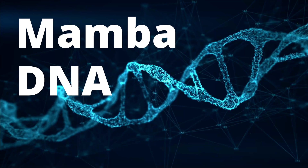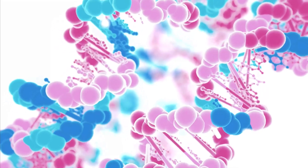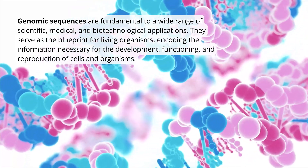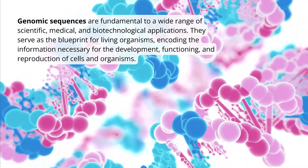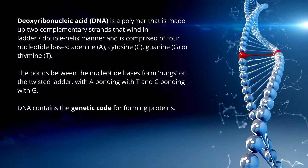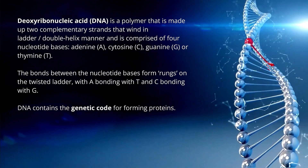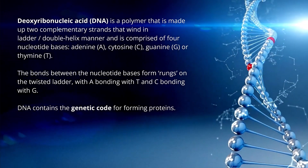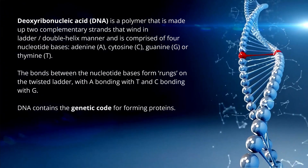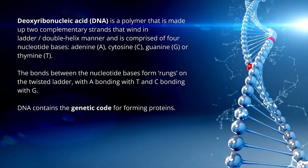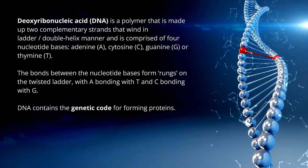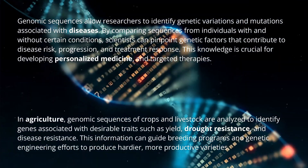Hello community. Artificial intelligence in genomics and molecular systems — are you sure? Let's have a look. Here we have our beautiful DNA, our double helix strand. We're interested in genomic sequences, fundamental for any scientific, medical, or biotechnological applications. Our deoxyribonucleic acid, with its beautiful double helix structure, is comprised of four nucleotide bases: adenine, cytosine, guanine, and thymine. DNA contains the genetic code for forming our proteins.